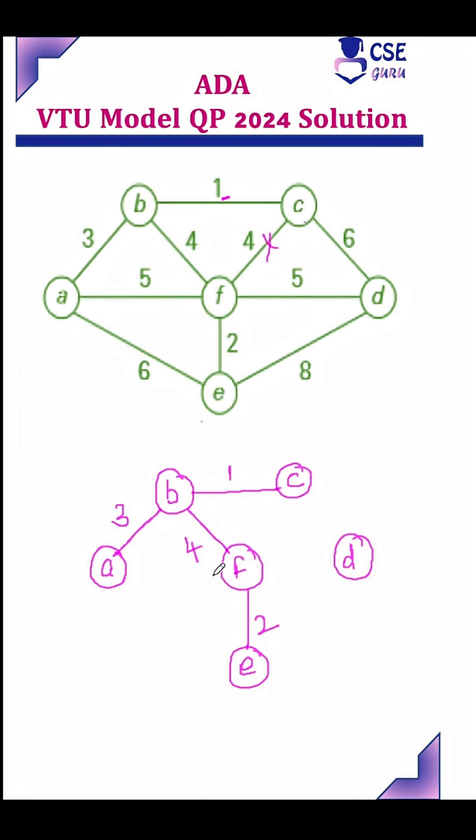Next least cost edge is AF. If you are including this edge also, it forms a cycle. Don't include. DF with weight 5, if you are including, it won't form a cycle.